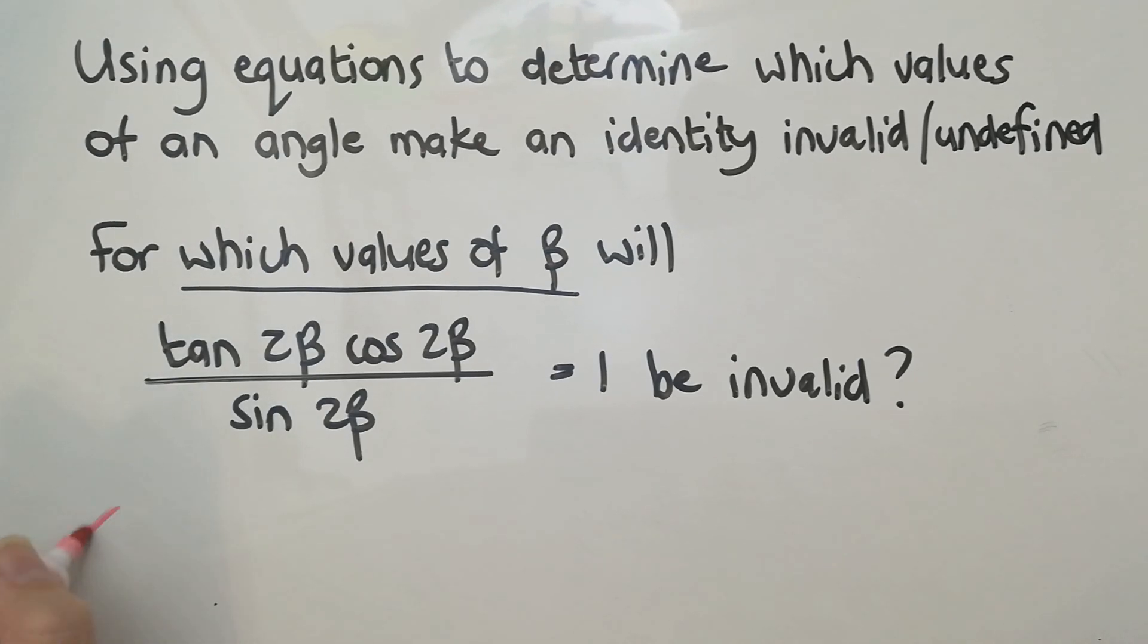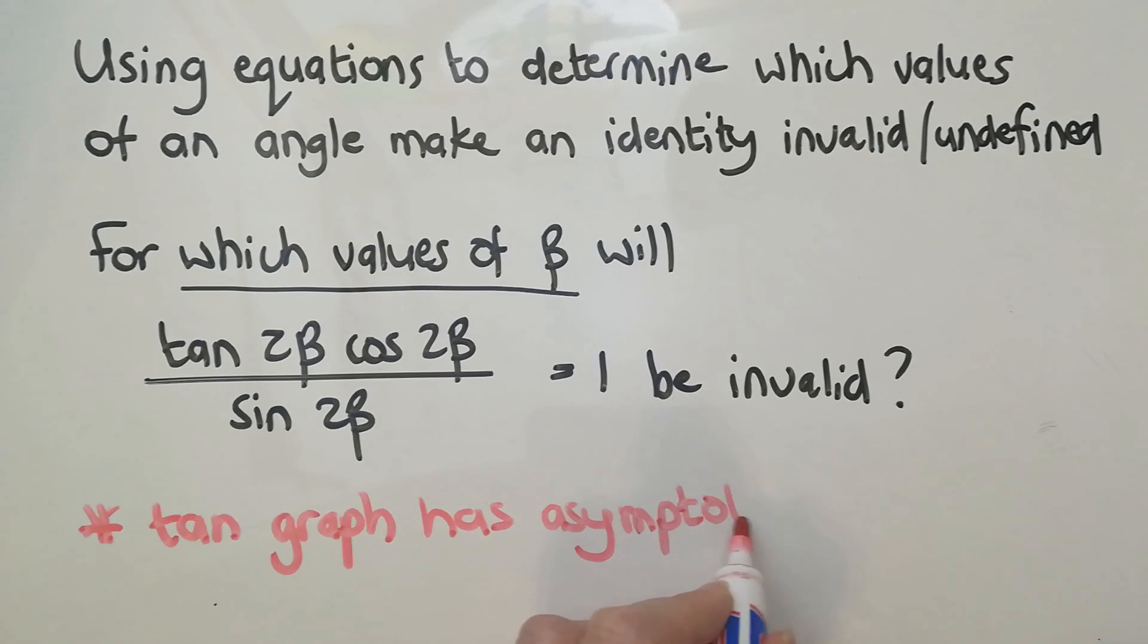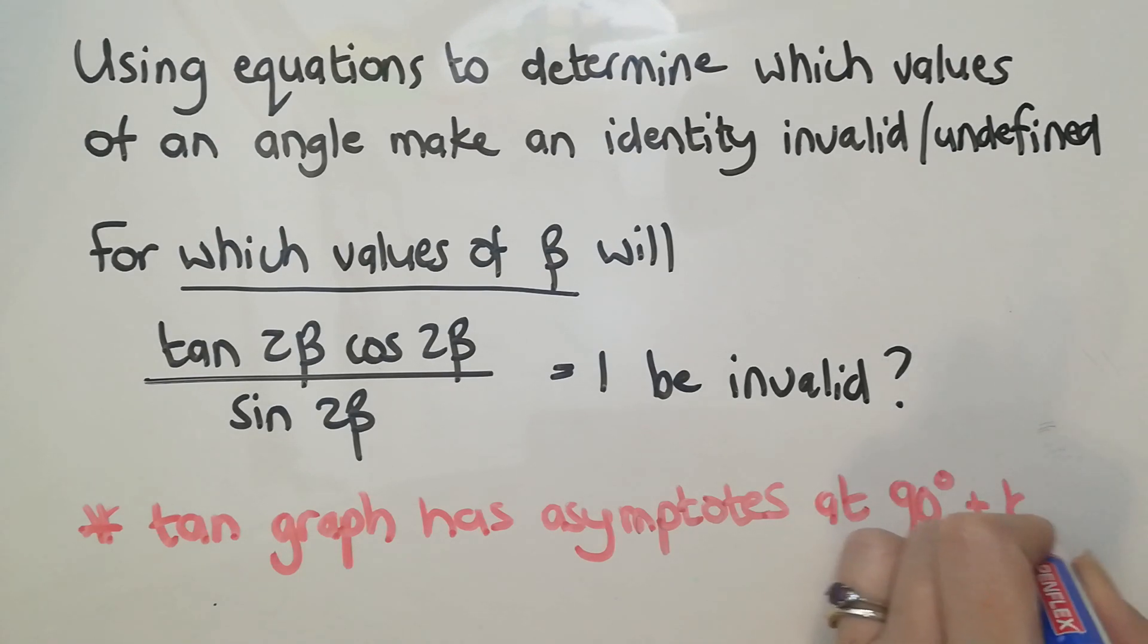So what we have to remember, and this is just theory knowledge which we're going to apply now, is that the tan graph is essentially invalid because it has asymptotes at 90 degrees and then thereafter plus k180, because it's every 180 degrees from 90 onwards.